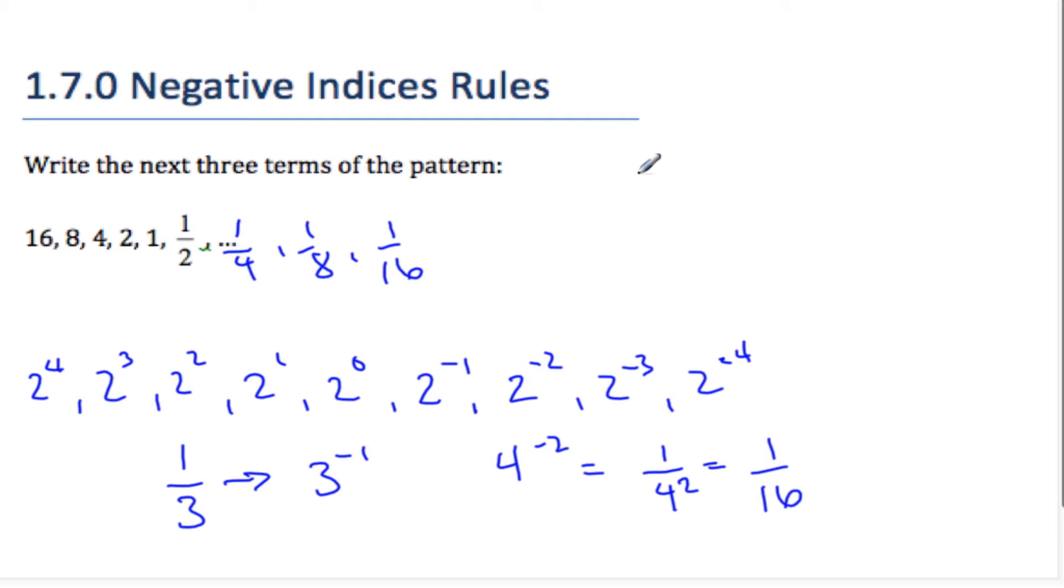And so what our general rule says, if I have a to the minus n, that's the same thing as saying 1 over a to the n. There's the big rule.